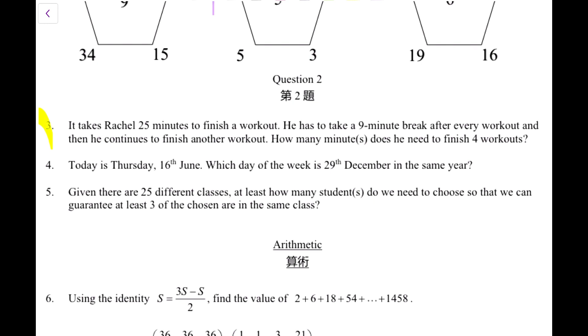It takes Rachel 25 minutes to finish a workout. He has to take a 9-minute break after every workout. We have to remember after every workout is a 9-minute break. And then he continues to finish another workout. How many minutes does he need to finish 4 workouts? Now, in order to understand, we know he's doing 4 workouts, but how many breaks does he need? You can do a simple one. So let me write down here. So he's doing a workout. Then he needs a break, 9-minute break. Then he does another workout. Then he needs a break. Then he needs a workout. And then he needs another break before he can do the final workout. Now, we do know that he's finished 4 workouts. So he finished the workout here. He does not need a break to start another workout. So this is the part that we will stop on.